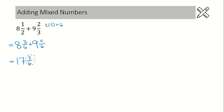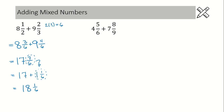The way that we would read this is 17 and seven over six, and in math the word 'and' means we are adding. So we're going to take this improper fraction and convert it to the proper mixed number of one and one over six. Now we can add everything up again: 17 plus one is 18, and our fraction part is one over six. So that's how you do it.